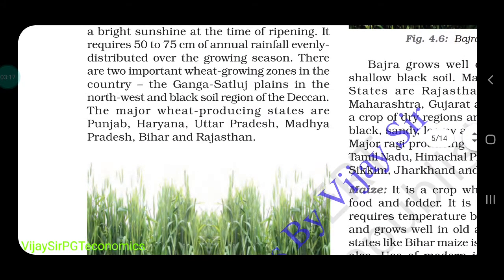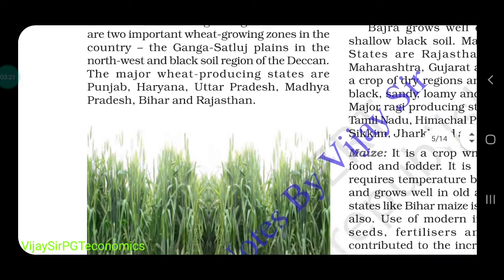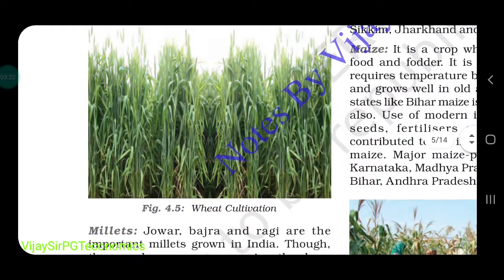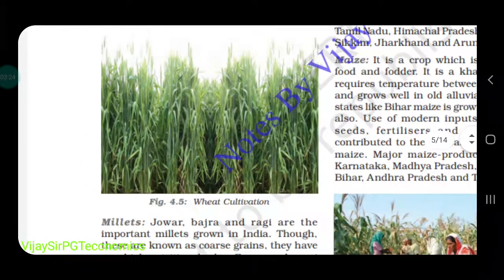The major wheat-producing states are Punjab, Haryana, Uttar Pradesh, Madhya Pradesh, Bihar, and Rajasthan. Here you can see a picture of wheat.